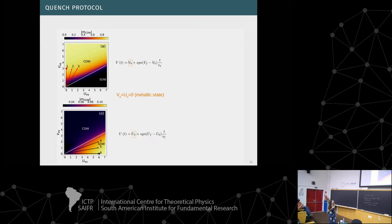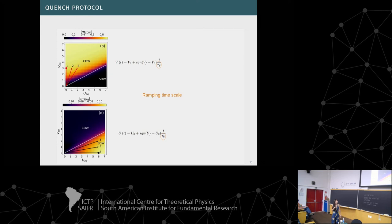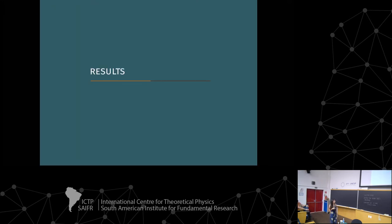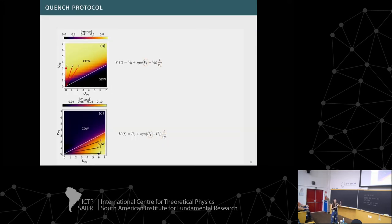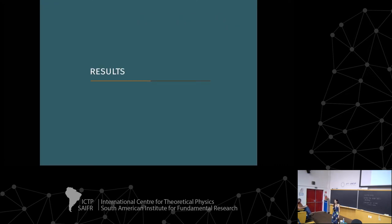Now I will talk about the quench. The arrows indicate the paths of the quench we performed. We start from the metallic state at U and V equal to zero, and we increased V and U linearly in time until these final values shown by the arrows. The ramping time scale of the quench is controlled through parameters tau_V and tau_U. The total time of the quench is proportional to these taus.